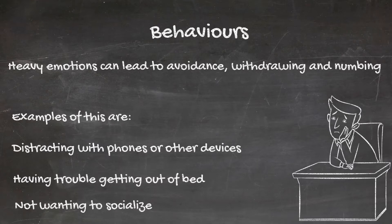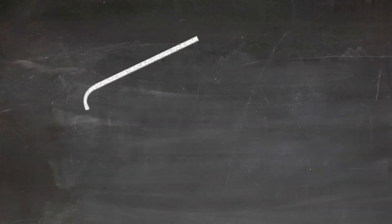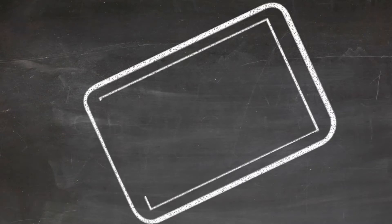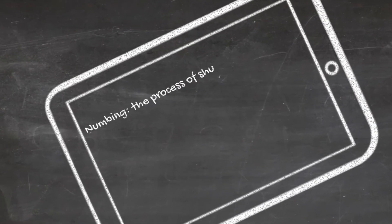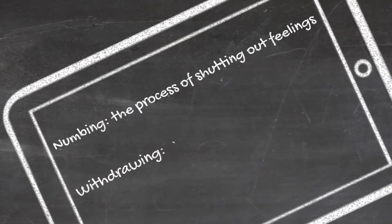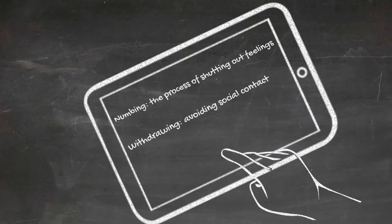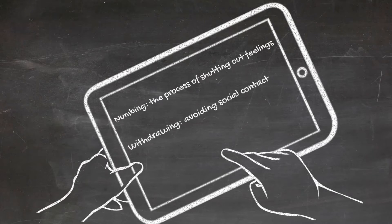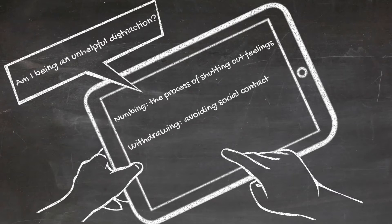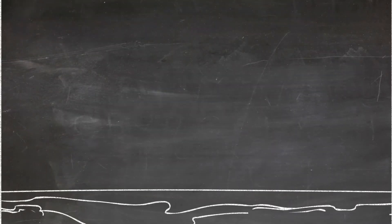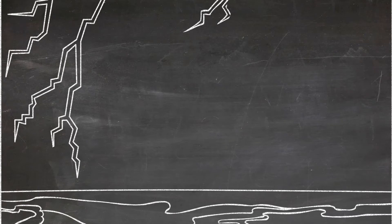In addition to avoidance, we can experience other coping pitfalls such as numbing and withdrawing. This can temporarily tune out uncomfortable emotions, and maybe we're on our phones for longer stretches of time. We're doing pretty much any task except the ones that bring up those uncomfortable feelings.